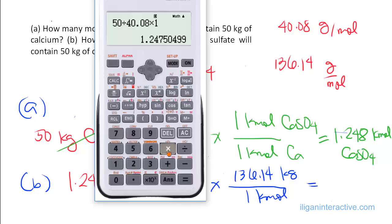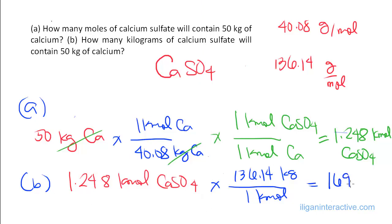So the answer will just multiply it by 136.14, and we got 169.8 kilograms of calcium sulfate.